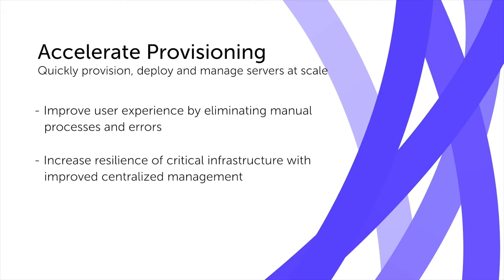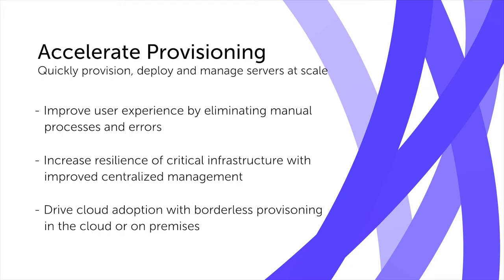It also increases the resiliency of critical infrastructure by allowing for improved centralized management of the entire appliance fleet — not only via the Address Manager but with the new APIs too. This feature allows customers to utilize the exact same APIs, tools, and service descriptors whether BlueCat appliances are deployed on-premises, virtually, or in the cloud. We can fully automate the appliance provisioning and reconfiguration of services in a consistent manner wherever they are deployed.